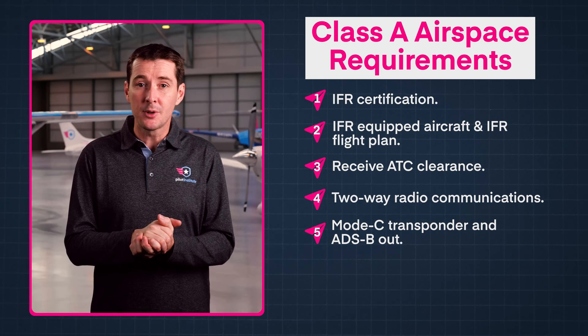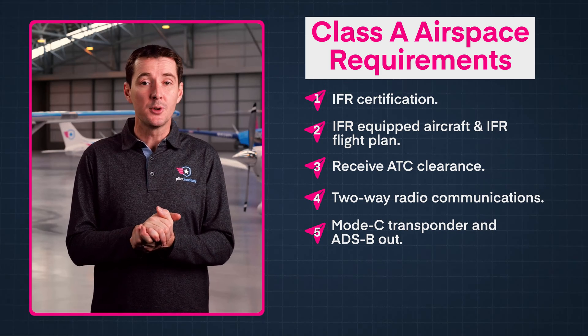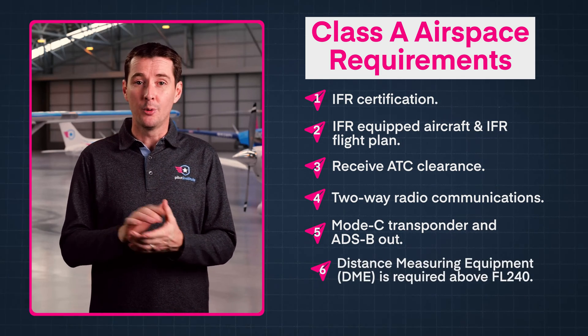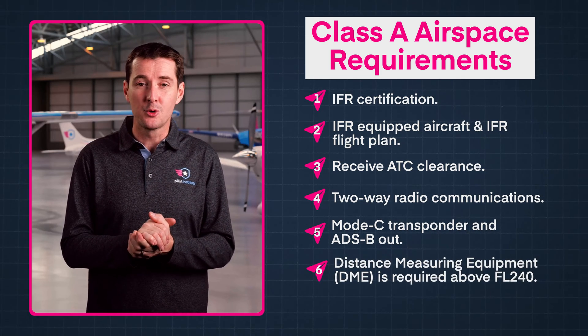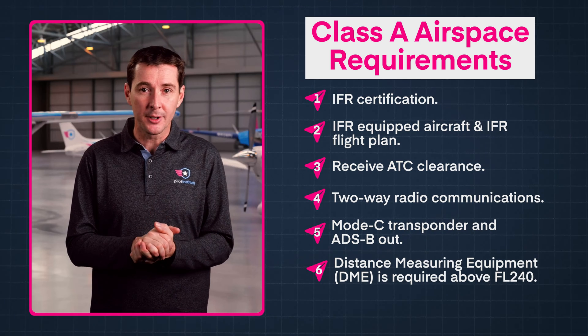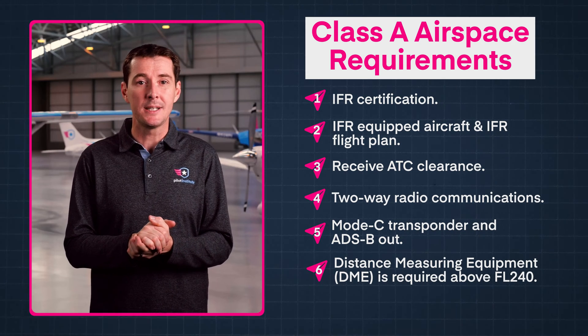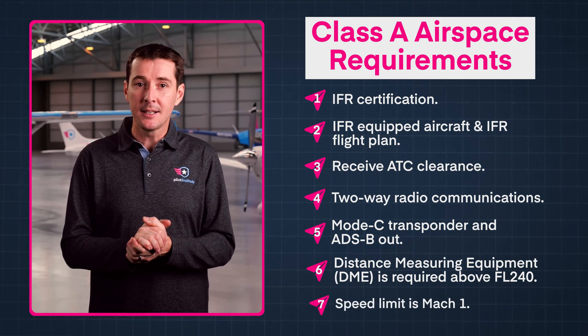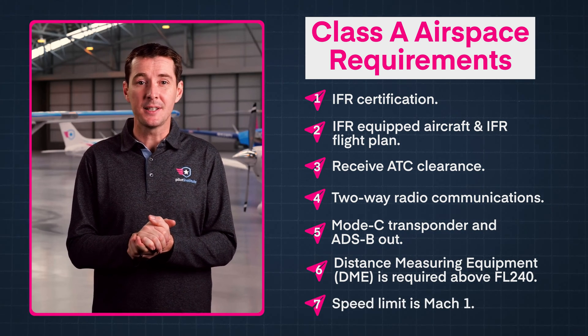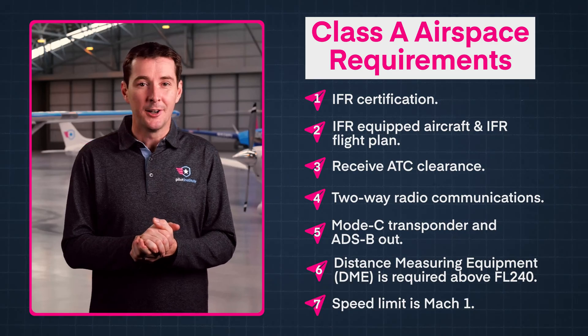You will need a Mode C transponder and also ADS-B out. If you go above flight level 240, you need a distance measuring equipment or DME. Lastly, the speed limit in Class A airspace is Mach 1.